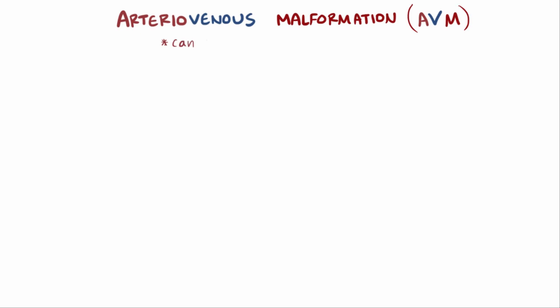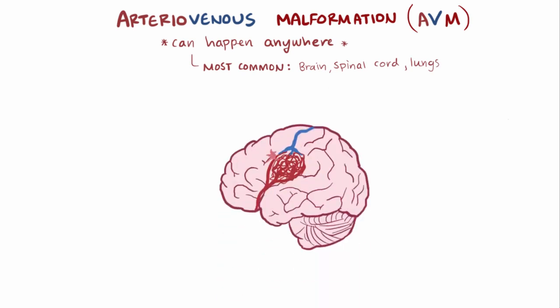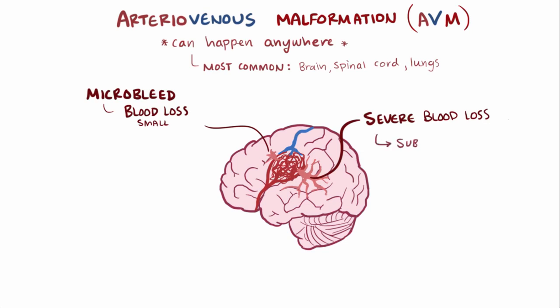Although AVMs can form anywhere in the body, they most often form in certain parts of the body, like the brain, the spinal cord, and the lungs. If the AVM ruptures in the brain, blood escapes into the surrounding brain tissue. Sometimes blood loss can be small, called a microbleed, which doesn't typically cause much damage, but sometimes when blood loss is severe enough, people might experience what's called an intracerebral or subarachnoid hemorrhage.